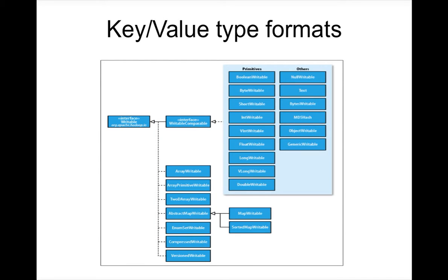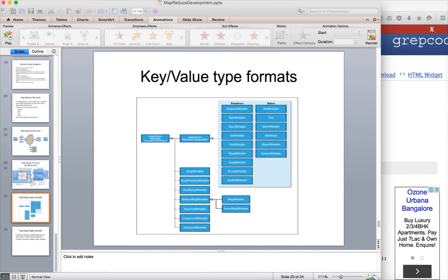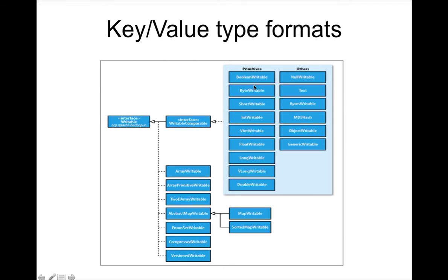For that reason, they have come up with a list of classes for primitives like BooleanWritable, ByteWritable, ShortWritable, IntWritable, FloatWritable, etc., which are serialized and also lightweight in nature. These Writable classes implement an interface called Writable, which has two methods: readFields and write. Whenever you implement this interface you have to provide the functionality for readFields and write, so that data can be read from HDFS and written to HDFS or to intermediate files.